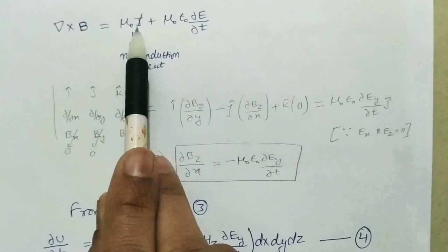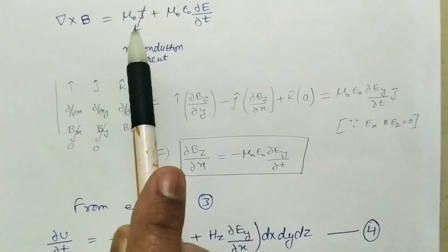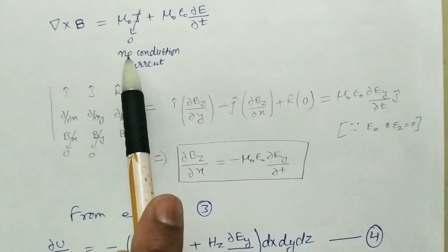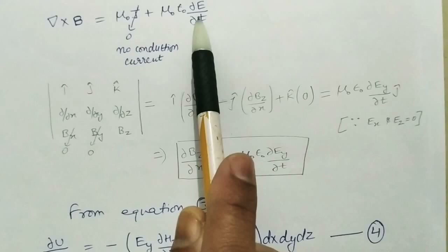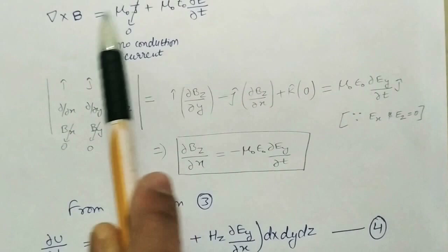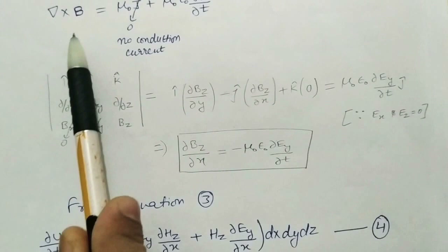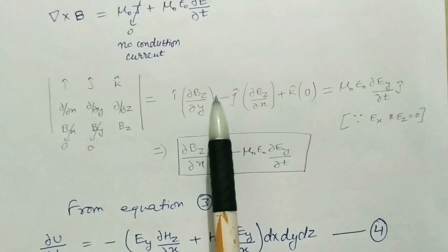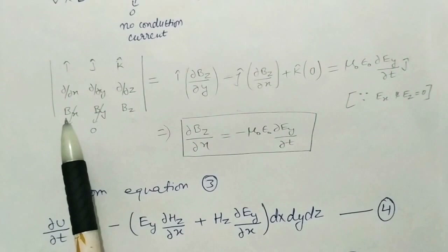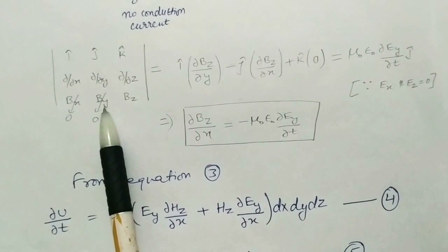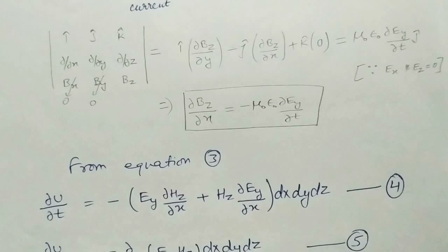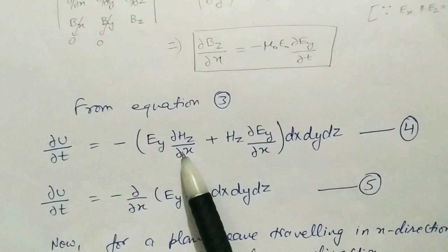Maxwell's fourth equation: del cross B equals mu-naught J plus mu-naught epsilon-naught del E by del t. But when an electromagnetic wave travels in vacuum, there are no charge particles and no motion of charge particles, so there is no conduction current. Therefore, the magnetic field is created only by the changing electric field. Expanding this equation in determinant form, putting the known zero values of B_x and B_y, we obtain the second equation replacing time derivatives with space derivatives.